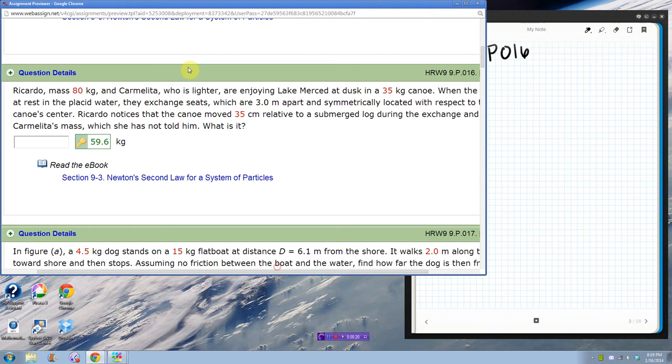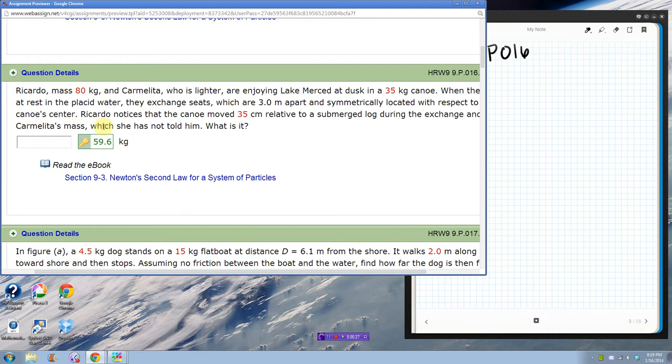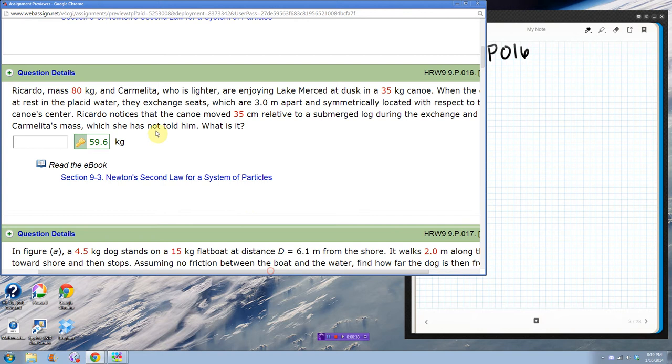When the canoe is at rest in the placid water, they exchange seats, which are three meters apart and symmetrically located with respect to the canoe center. Ricardo notices that the canoe moved 35 centimeters relative to a submerged log during the exchange and calculates Carmelita's mass, which she has not told him. What is it?